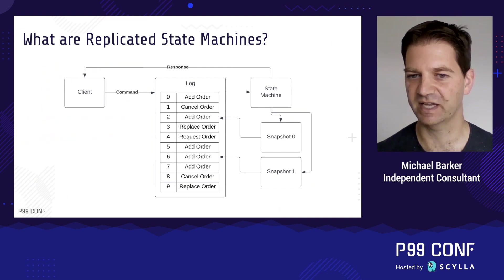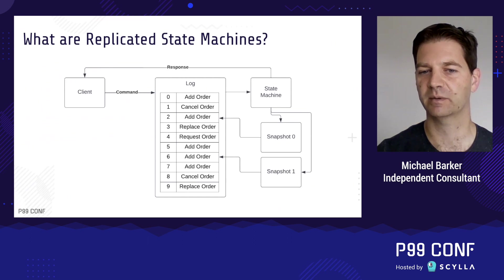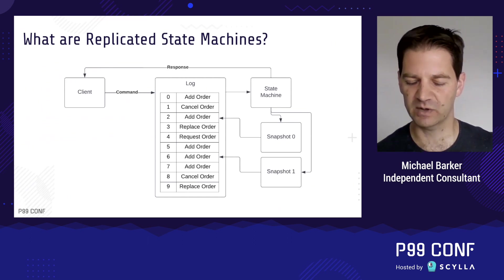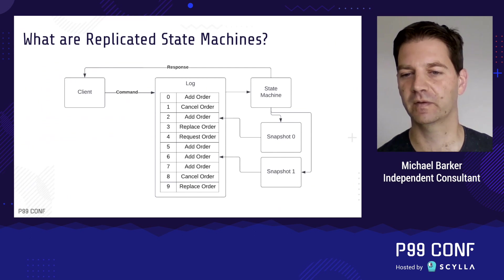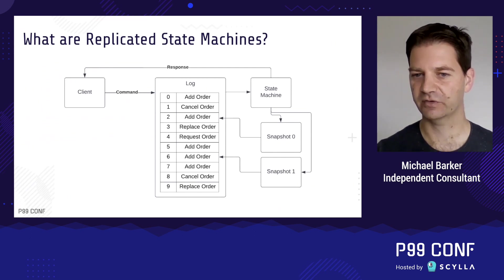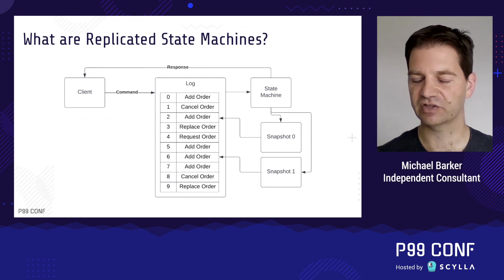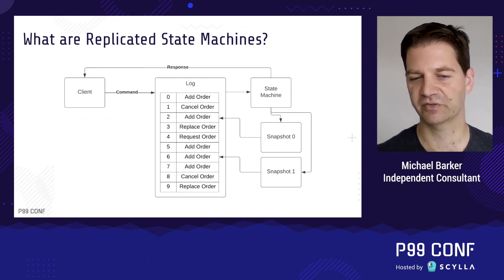We have an optimization called a snapshot. The idea is we capture all the state variables at a point in time, along with a reference to the position within the log. So if we need to recover the system, instead of replaying the entire history of the service, we simply load the latest snapshot and replay forward from its associated position in the log.